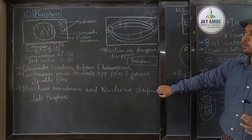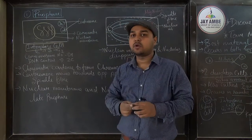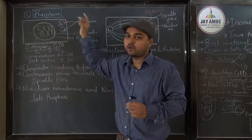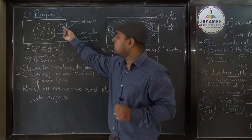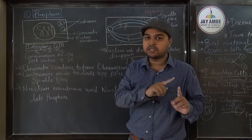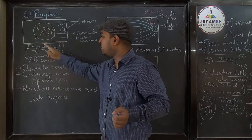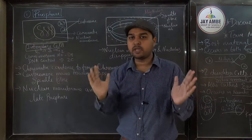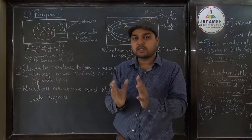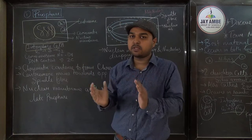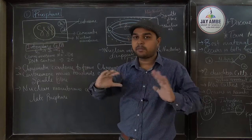Now let's discuss the phases of mitosis. Before prophase, let's look at the interphase figure. In interphase — which has G1, S, and G2 phases — the nuclear membrane is fully present. Chromatin fibers are scattered and the centrosomes are present together, not yet moving towards the poles. The chromosome number is 4 and DNA content is 2C.